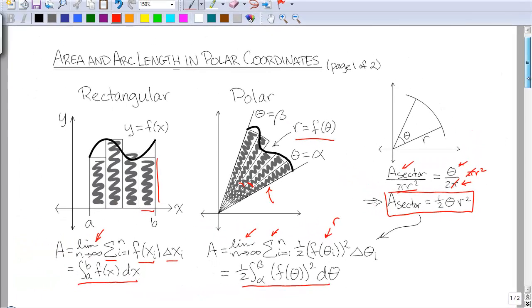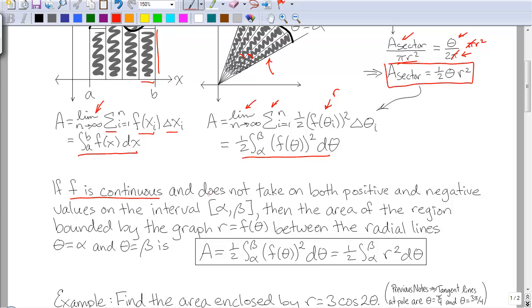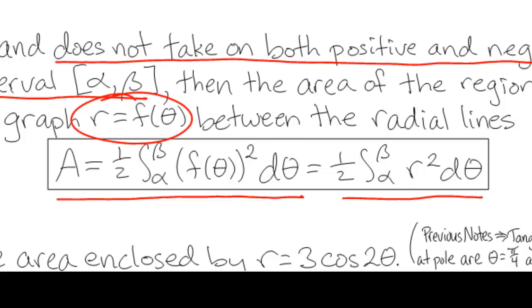This is a little different than what we're used to with rectangular coordinates. As long as we have a continuous function and the function does not take on both positive and negative values on the interval between alpha and beta — meaning the polar curve stays all positive r or all negative r — then the area of the region bounded by the graph r equals f of theta between the radial lines theta equals alpha and theta equals beta is: area equals one half the integral from alpha to beta of f of theta squared d theta. Sometimes you may see this formula as one half the integral from alpha to beta of r squared d theta, but remember r equals f of theta.